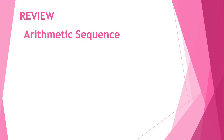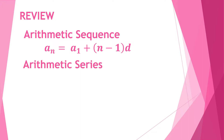Before we proceed, let's have a review first of the formulas we're going to use in our discussion. We have the formula for the arithmetic sequence, which is a sub n is equal to a sub 1 plus n minus 1 times d. You use this formula if you want to find a specific term on a given arithmetic sequence.